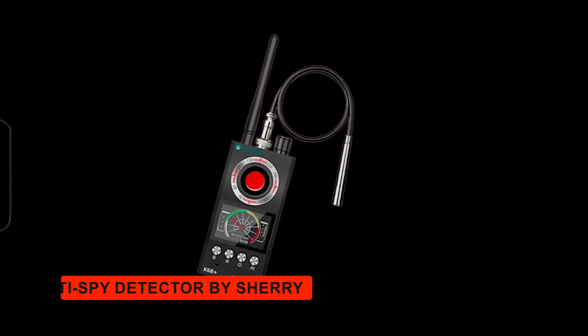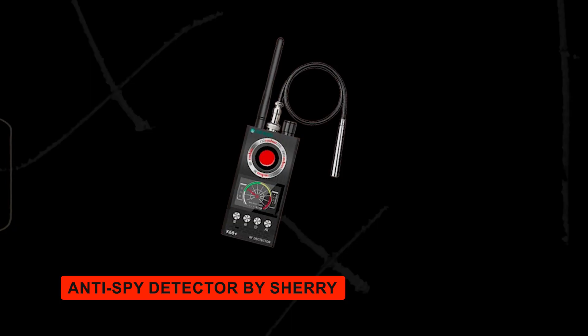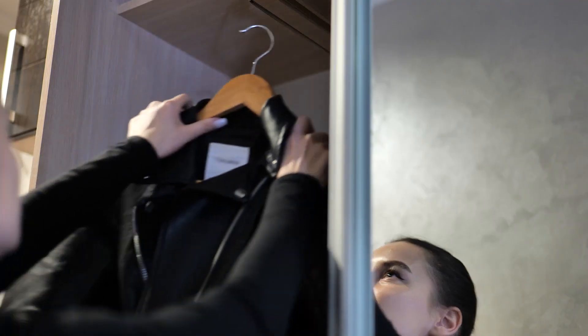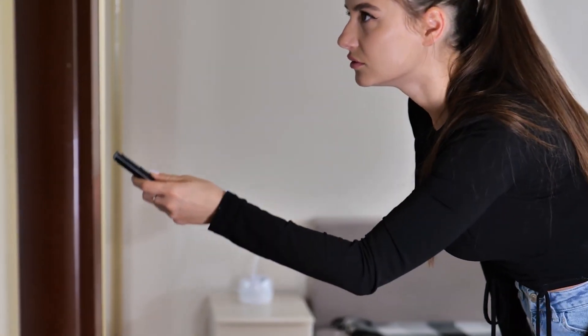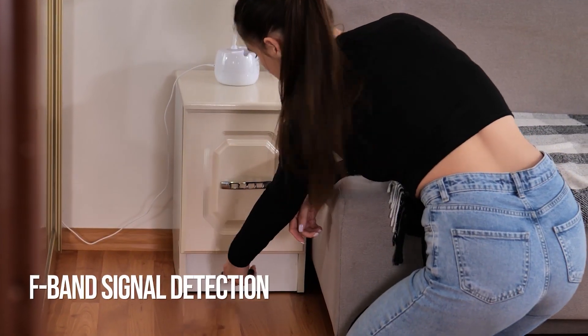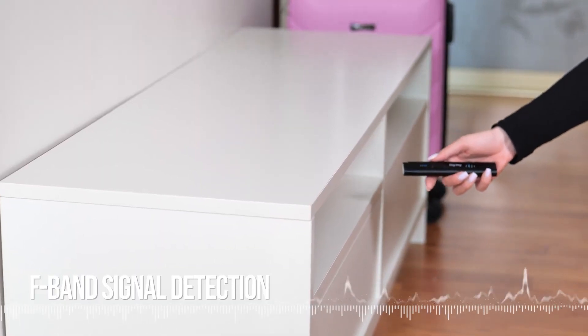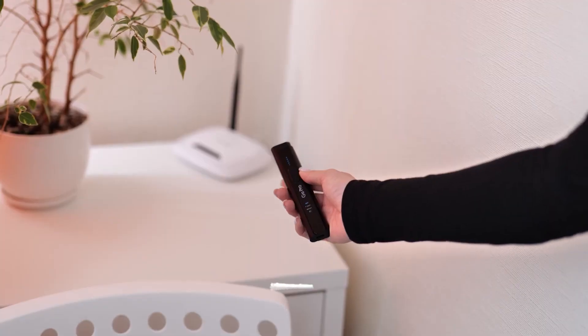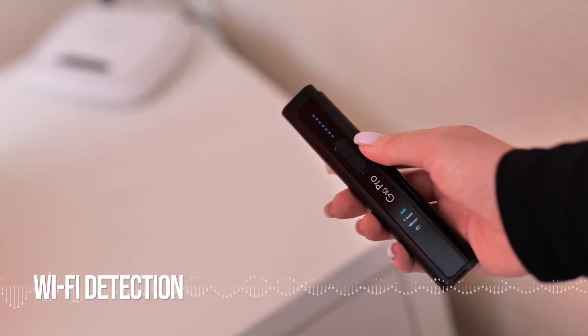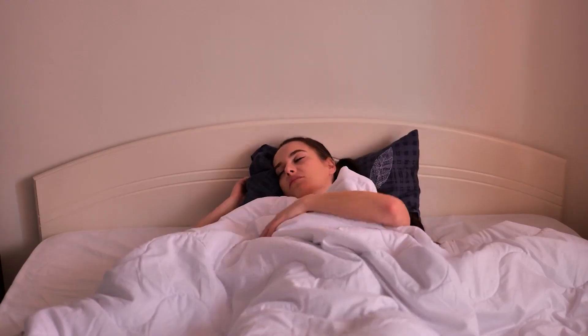Anti-Spy Detector by Sherry. This device detects RF signals, magnetic fields, and hidden camera lenses, protecting your privacy from unauthorized surveillance. Ideal for ensuring that no hidden cameras or bugs are spying on you in hotels, changing rooms, or your home.